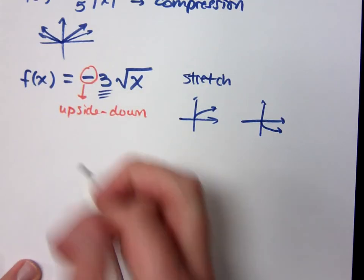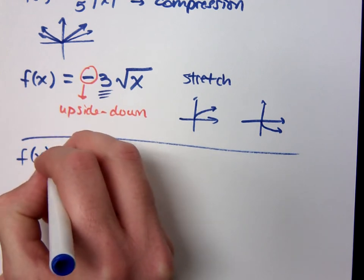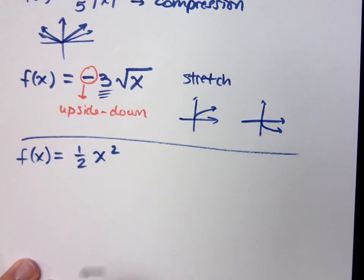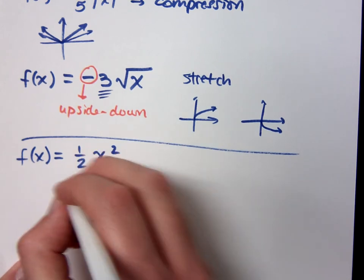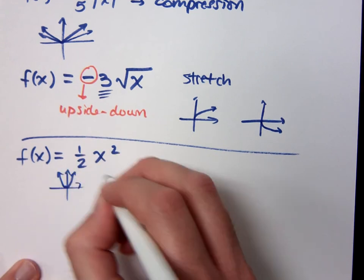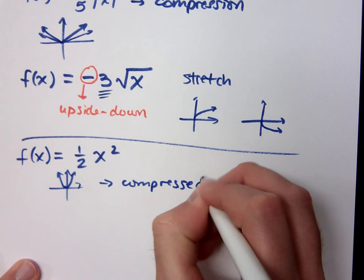So, let's quickly run through a few more examples and see if you can figure out what you would have here. f(x) is equal to 1/2 x squared. What kind of shape do you have? It's a parabola that has been compressed.